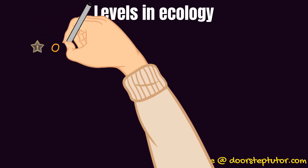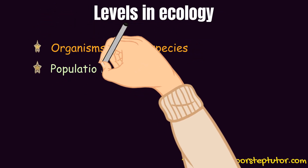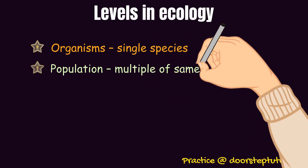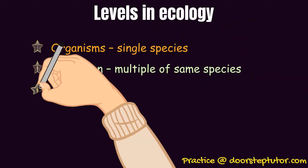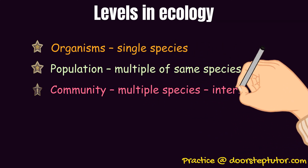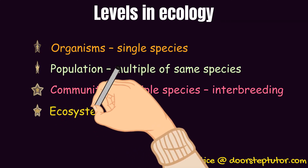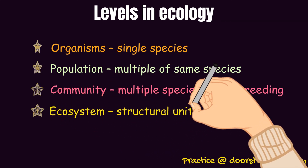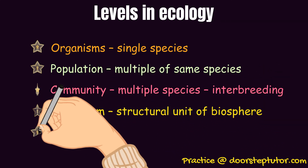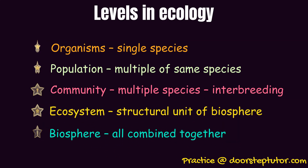Coming to the levels in ecology: the first is organisms, which are single species; then comes population, when there are multiples of the same species; third is community, when multiple species interbreed; fourth is ecosystem, which is the structural unit of a biosphere. When all of this is combined, it constitutes to become a biosphere.